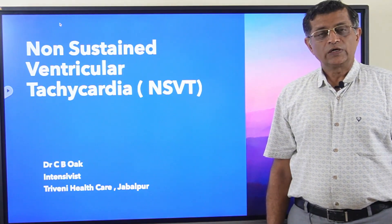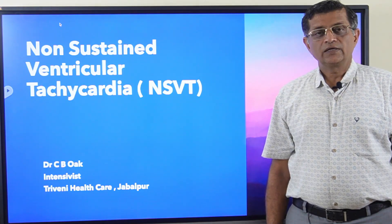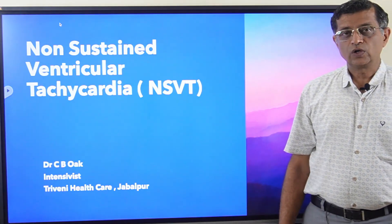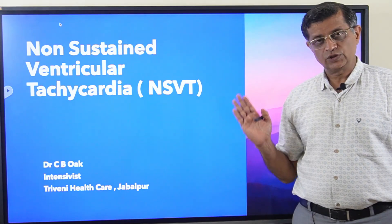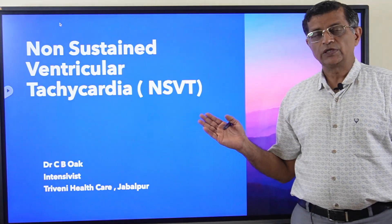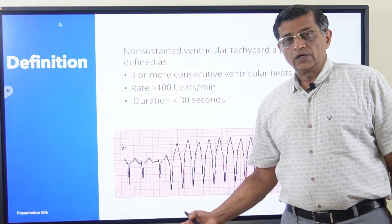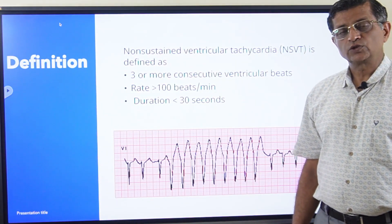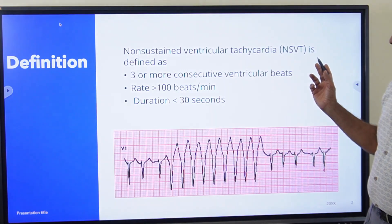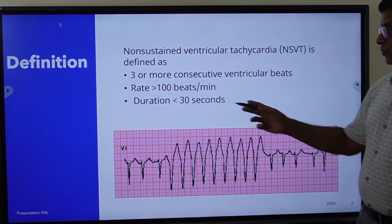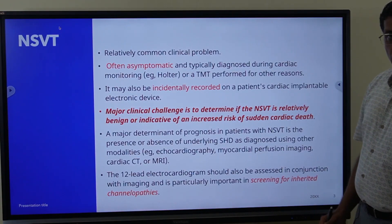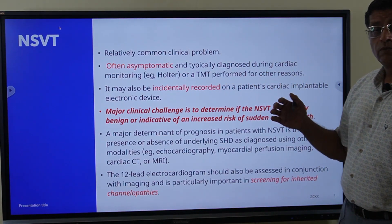Good evening friends, welcome to my channel Critical Care Basics. This is the 38th lecture on non-sustained ventricular tachycardia. The last lecture was on ventricular ectopics, and this lecture follows that. When ectopics come in a row, more than three and less than 30 seconds, that is called non-sustained ventricular tachycardia.